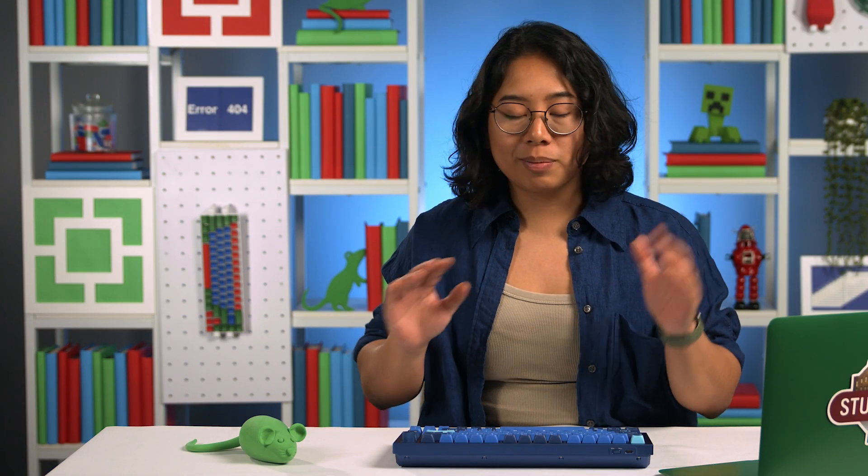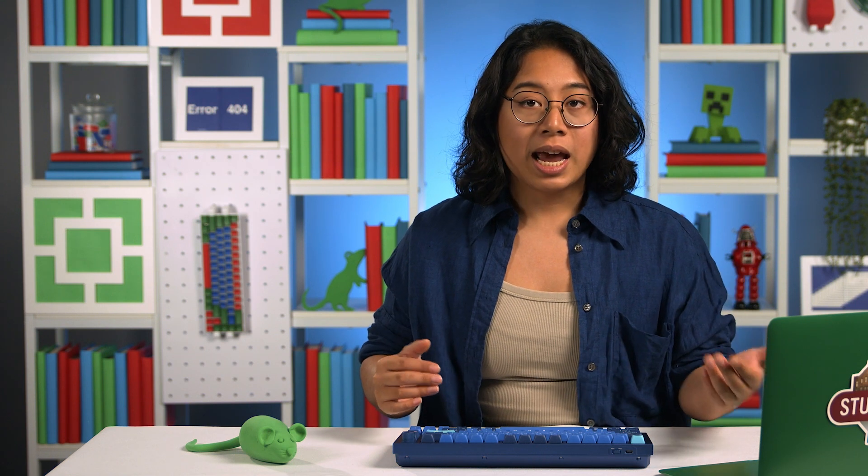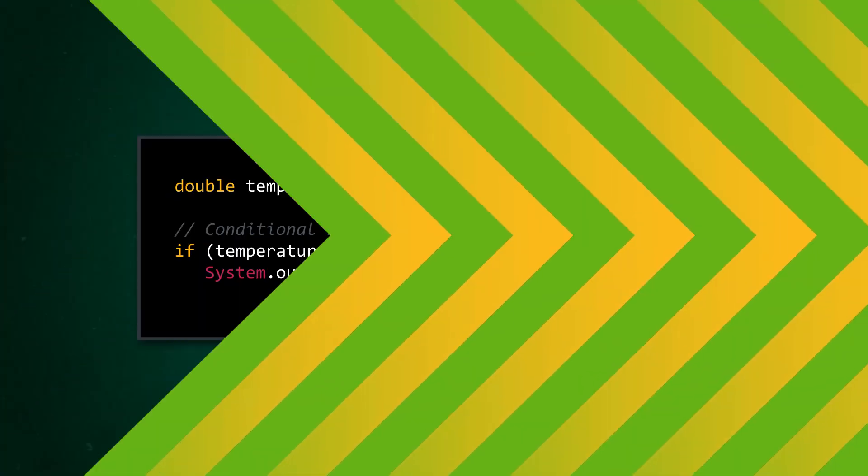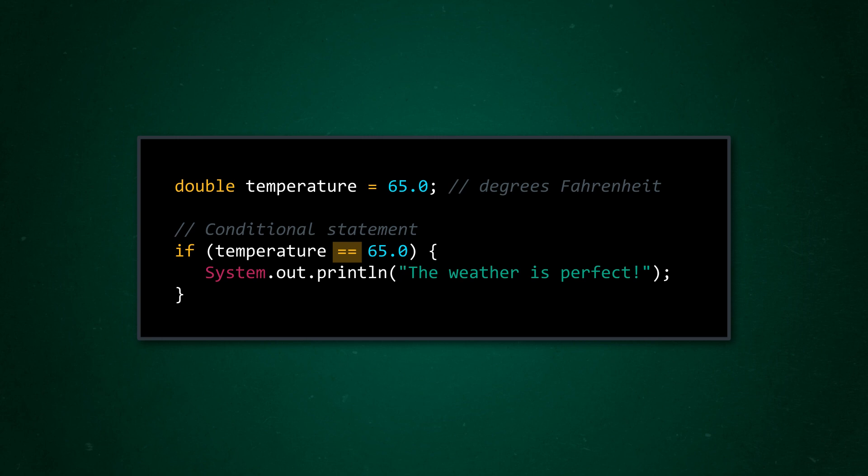Let's start with something really simple, just to make sure that the thermometer is working. In my objectively correct opinion, 65 degrees Fahrenheit is the perfect temperature. That's 18 degrees Celsius, if you live almost anywhere else in the world, or 291 Kelvin, if you're correct. Anyway, let's build a conditional statement to check if the temperature is exactly 65 outside. Here we use double-equal signs to see if the temperature matches 65. If it does, the computer will tell us that the weather is perfect.